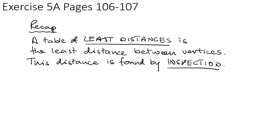You should now be able to do Exercise 5A on pages 106 to 107. Just a quick recap: a table of least distances, as seen in both examples, gives the least distance between vertices, and this distance is found by inspection.